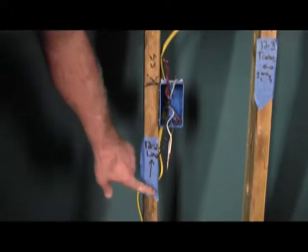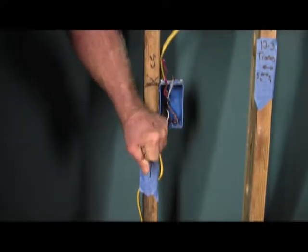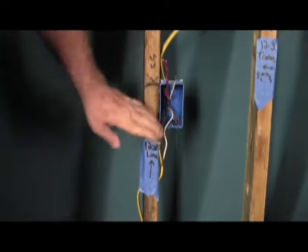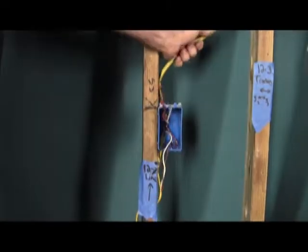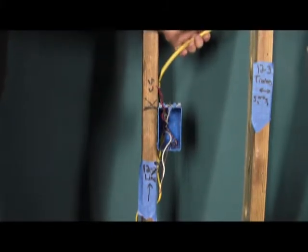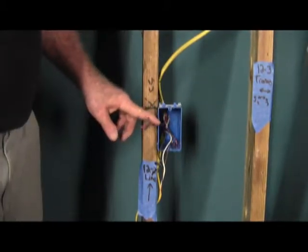It says line 12-2, that's these three wires here. Actually there's two grounds but they're already connected. We have our 12-3 right here which goes over to the other three-way switch.